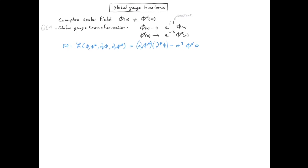So we see that if we use this expression for the field in the Lagrangian, we get the same expression as if lambda were equal to zero — that is, before the transformation. Therefore the Lagrangian is unchanged under global gauge transformation, which makes sense because we usually don't want our physics to depend on the phase.